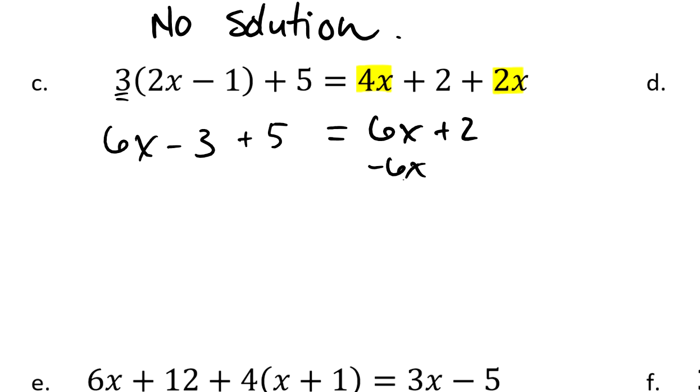If I subtract the 6 times x from each side, I'm left with negative 3 plus 5 equals 2, positive 2. And it turns out when I combine negative 3 and 5, I do get 2. So this ends up becoming 2 is equal to 2. What that means is it doesn't matter what I pick for x, any value of x is a solution.